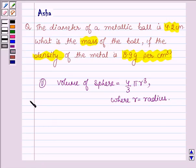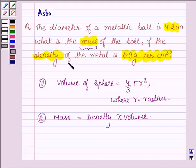This is the first formula and the second formula to calculate the mass is equal to density into volume. So here we have to find the mass of the ball and we are given the density. So first we have to find the volume.